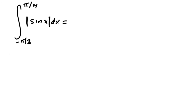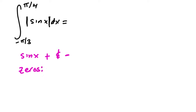To find the integral of the absolute value of sine of x, we need to break this up. Find where sine of x is positive and where it is negative, because we have to split up the integral there. The first thing you do is find all the zeros on your interval. From negative pi over three to pi over four, sine equals zero at x equals zero.